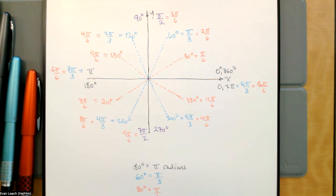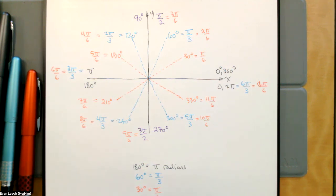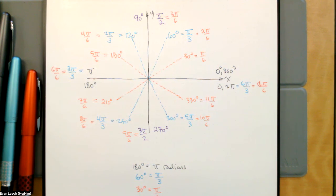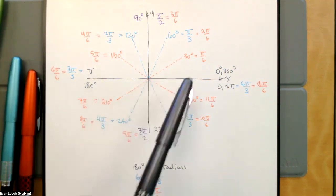All right, so here's your task — here's what you need to do. You've learned the unit circle in degrees: 30, 45, 60, then 90 and all the way around — the corresponding reference angles.